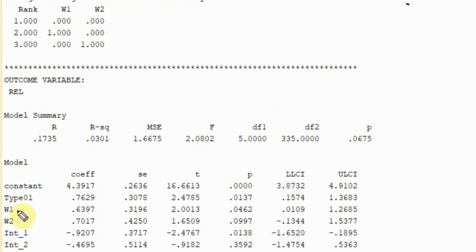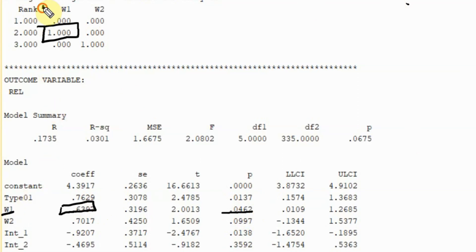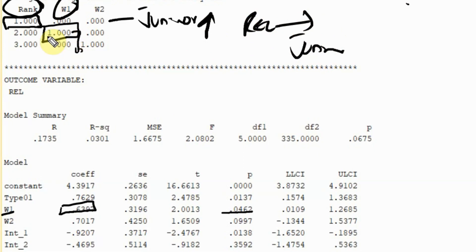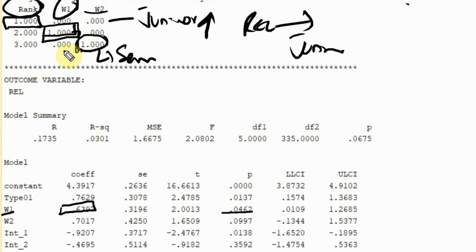Now, W1 is middle rank. Middle rank employees have a positive sign and this is significant as well. This is compared to the reference category, which is junior (coded as 1,1). So middle rank employees have higher reliability in comparison to junior level employees. W1 shows middle rank employees and W2 shows senior level employees. Junior is not shown because junior is your reference category to which all other categories are compared.